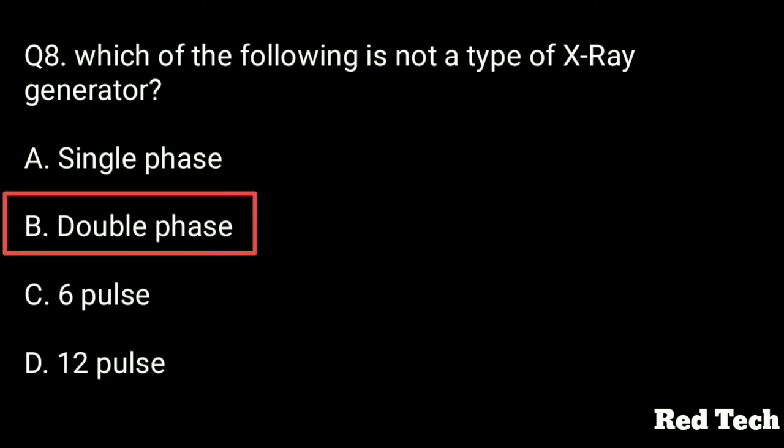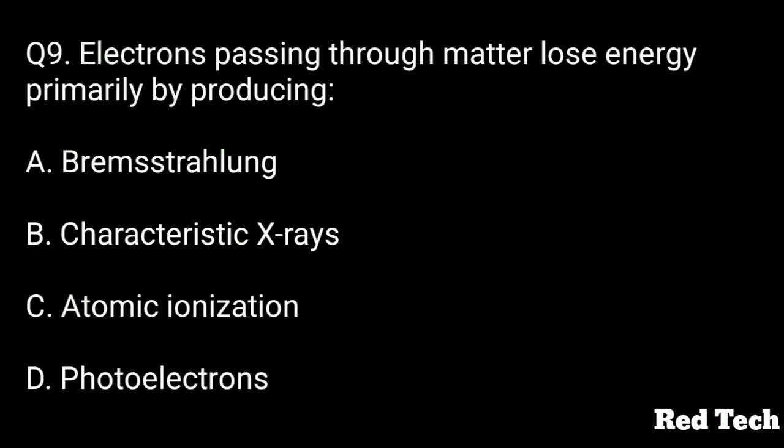Question number nine: Electrons passing through matter lose energy primarily by producing what? Options: bremsstrahlung, characteristic X-ray, atomic ionization, or photoelectrons. The right answer is option C, atomic ionization.